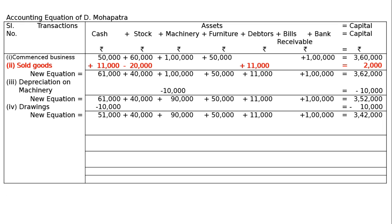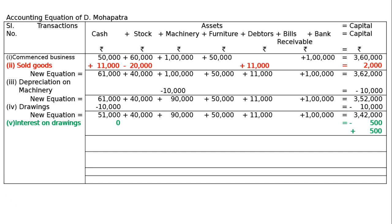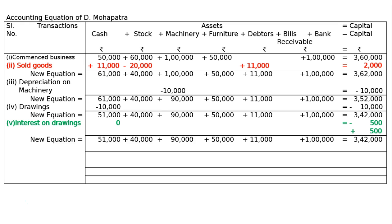Transaction 5: Interest on drawings charged at the rate of 5%. Drawings is 10,000, so 5% is 500. Interest on drawings is income for the business and an expenditure for the owner — hence it is added to capital and then deducted from capital. A new equation results.